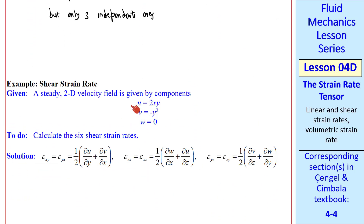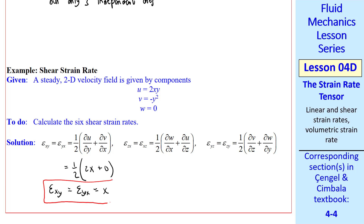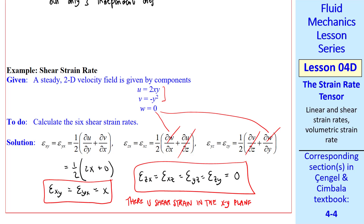Let's do an example. Taking the same velocity field as before, let's calculate the six shear strain rates, or three independent ones. ∂u/∂y is 2x, and ∂v/∂x is 0 since there's no x in the v term. So ε_xy equals ε_yx equals x. Since w is 0, those terms go away, and since neither u nor v are functions of z, those derivatives also go away. So the other four components are all 0. We conclude there is shear strain in the xy plane only.